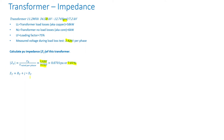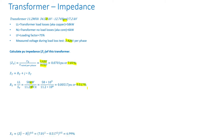The per-unit impedance equals resistance plus J times reactance. The resistance is load loss divided by apparent power: 58 kW divided by 11.2 MVA — be careful with units, since k means times one thousand and M means times one million. This gives 0.517 percent. The reactance is the square root of impedance squared minus resistance squared, which gives 6.99 percent.